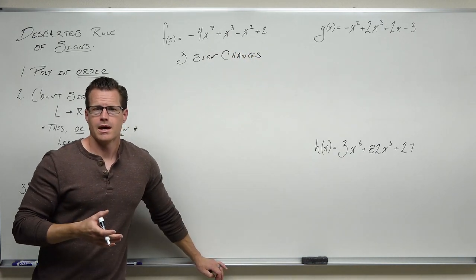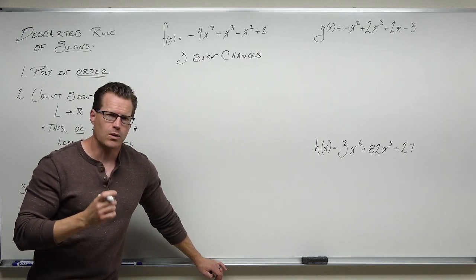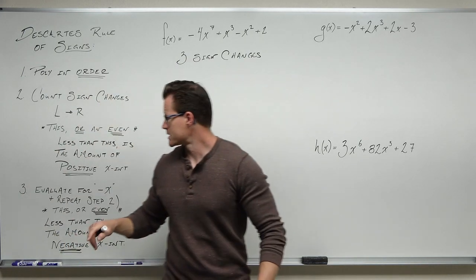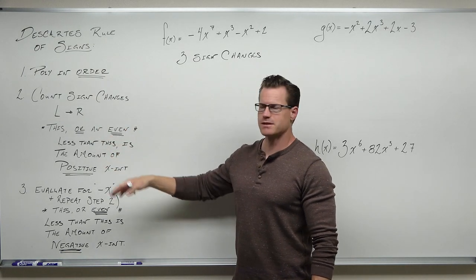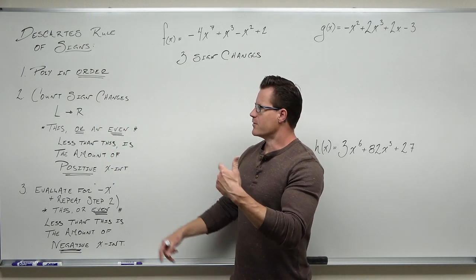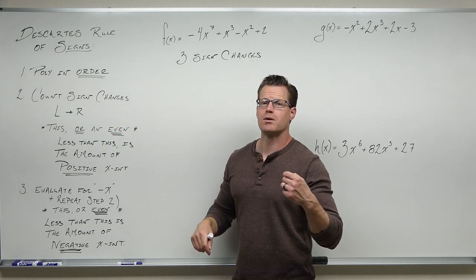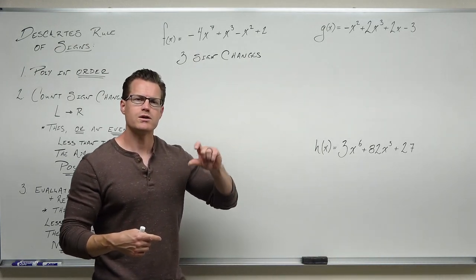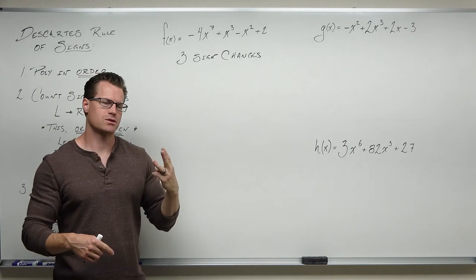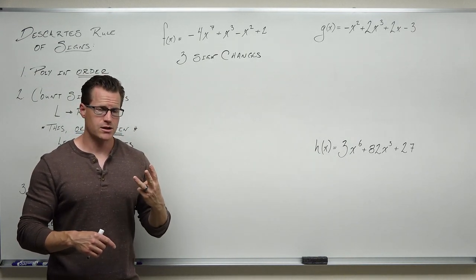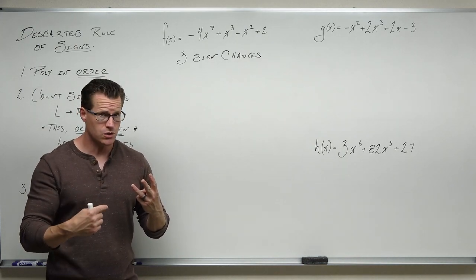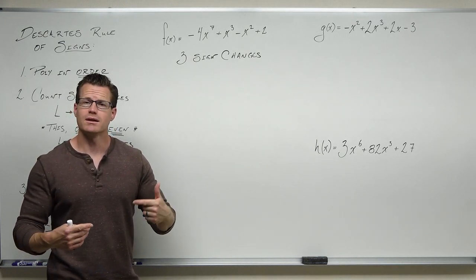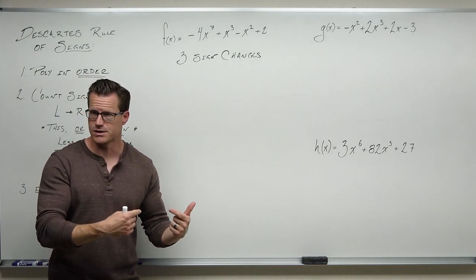What that means is that in this polynomial, if you were to graph or solve it, you are going to have either three positive x-intercepts — that's what the rule says. You will have this number of sign changes, or an even number less than that. Even numbers are two or four or six. So you count the number of sign changes — three — and keep subtracting two until you hit either one or zero, and you will have a list of the number of positive x-intercepts you could get.